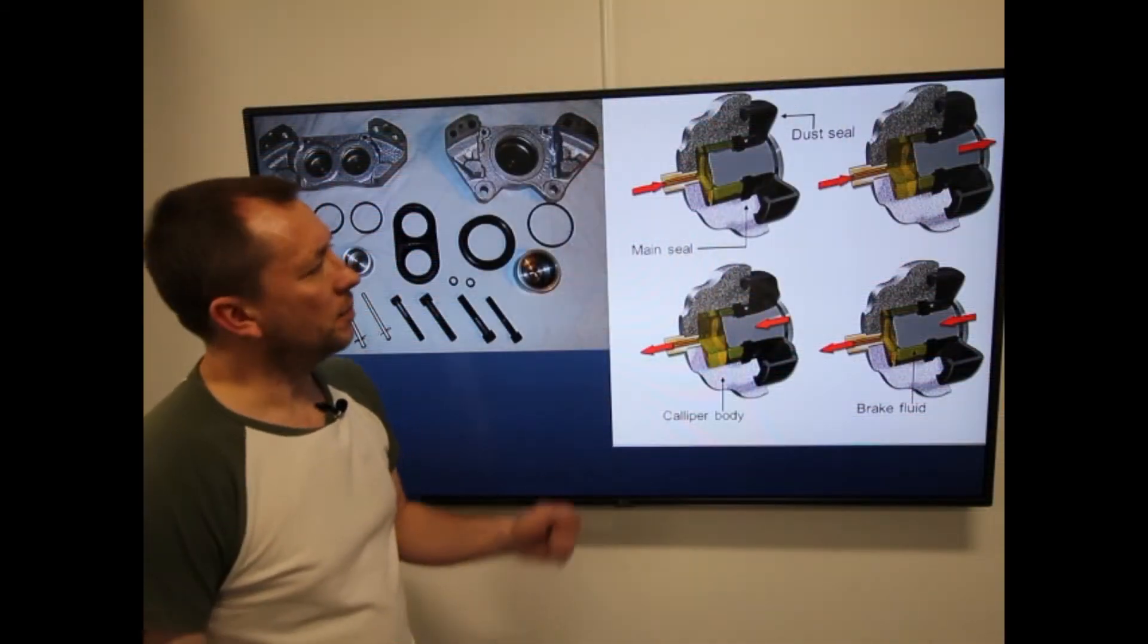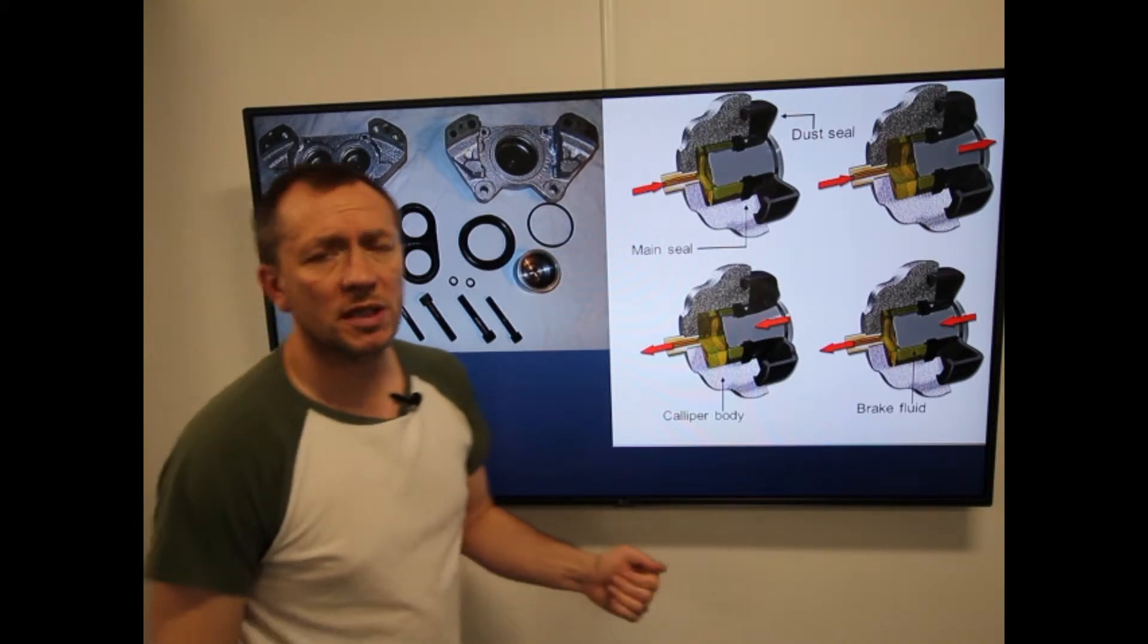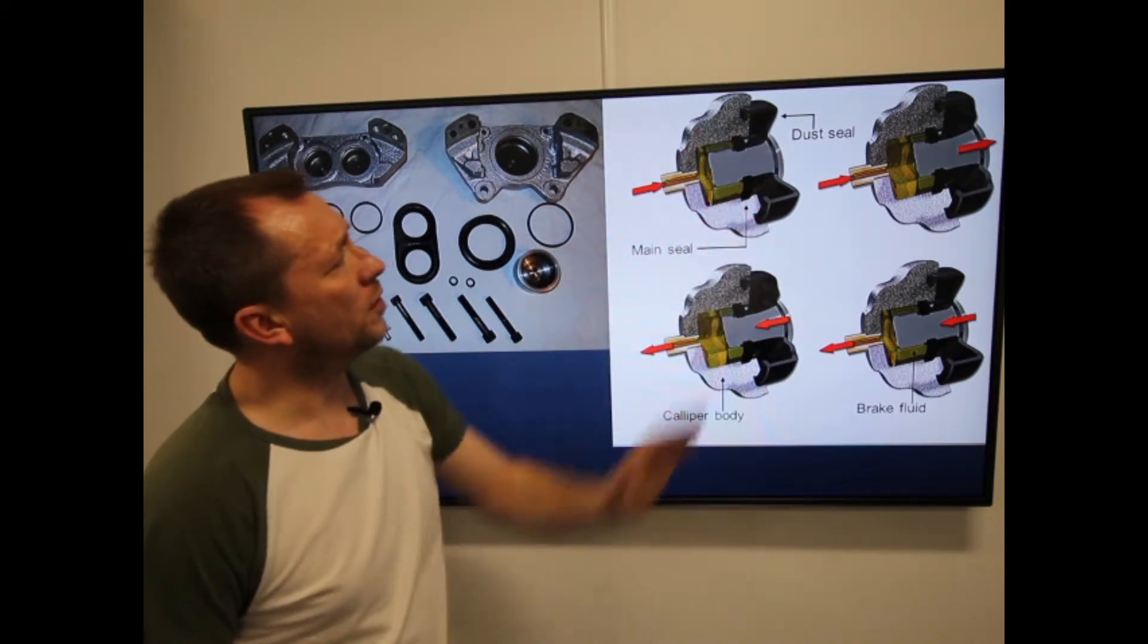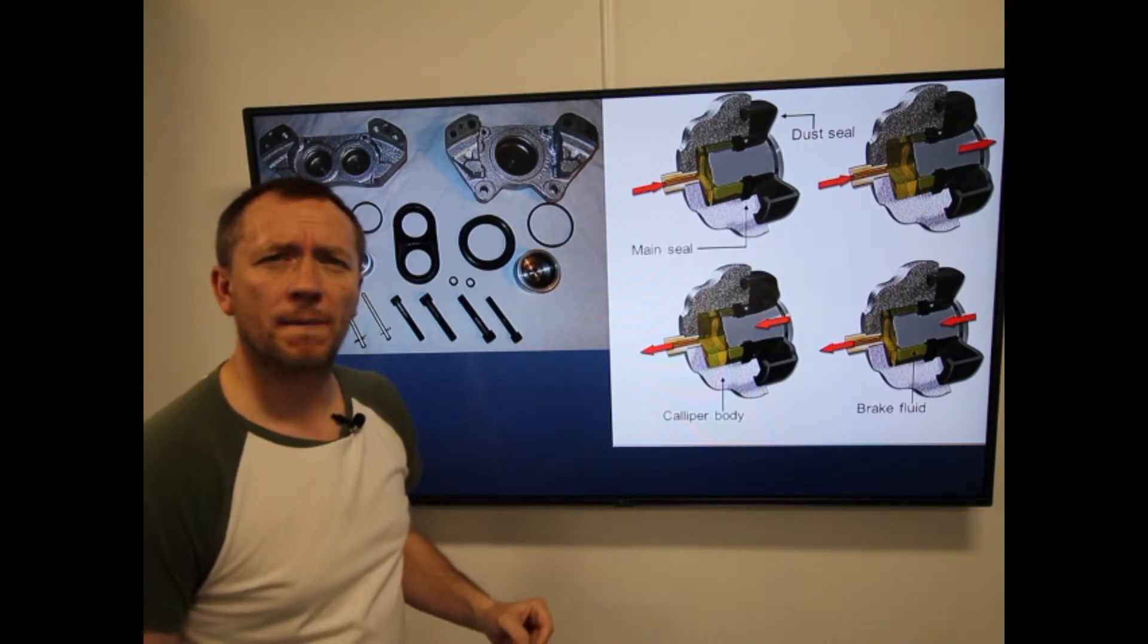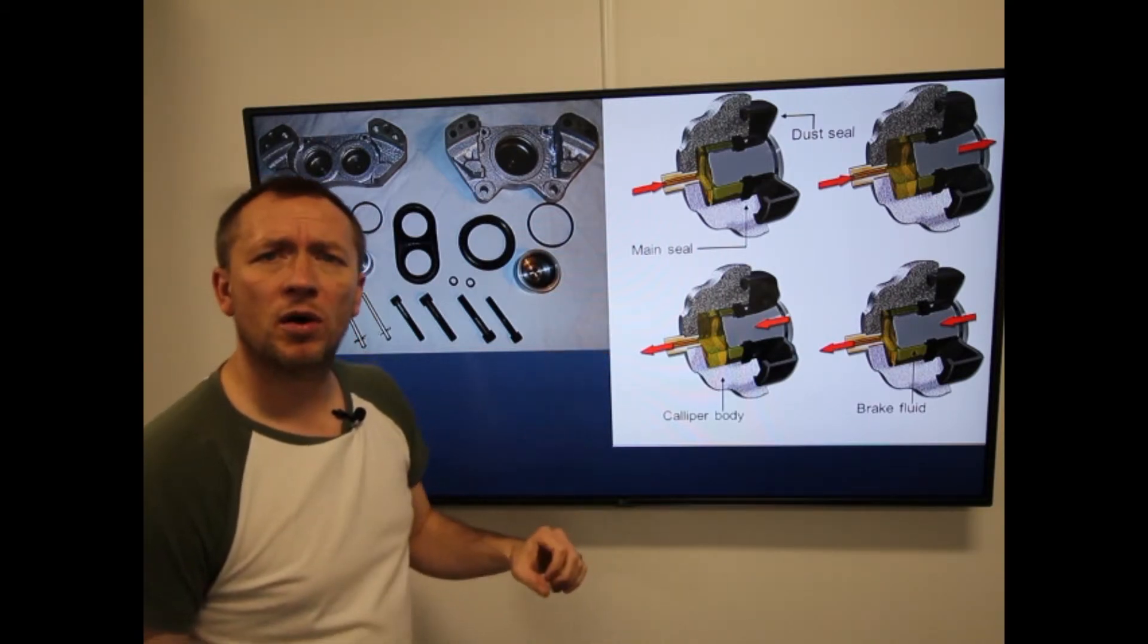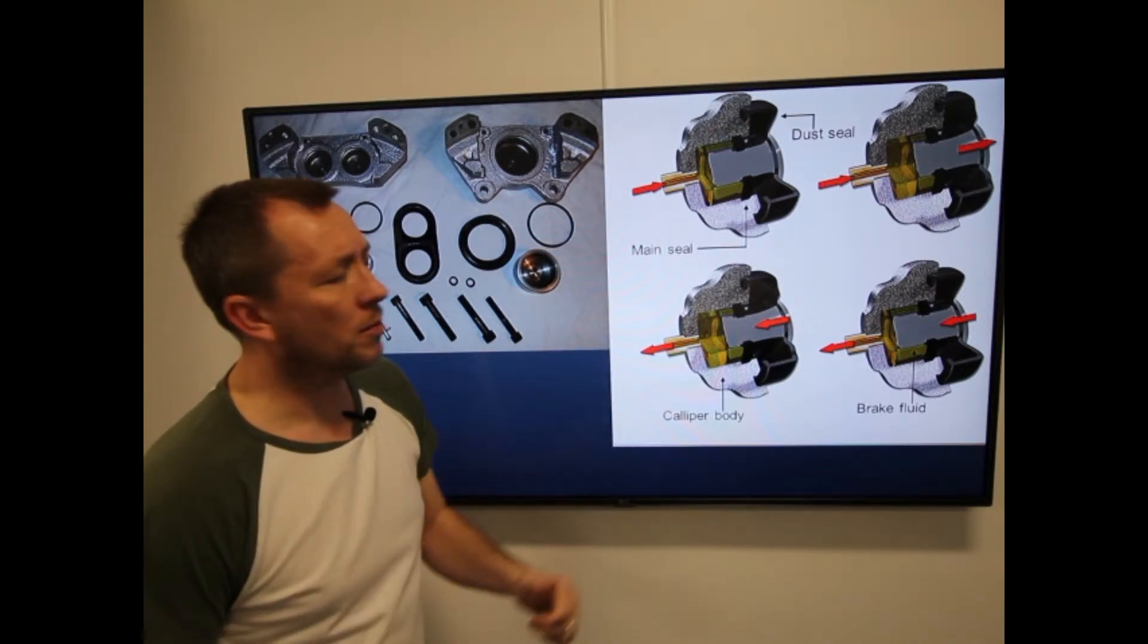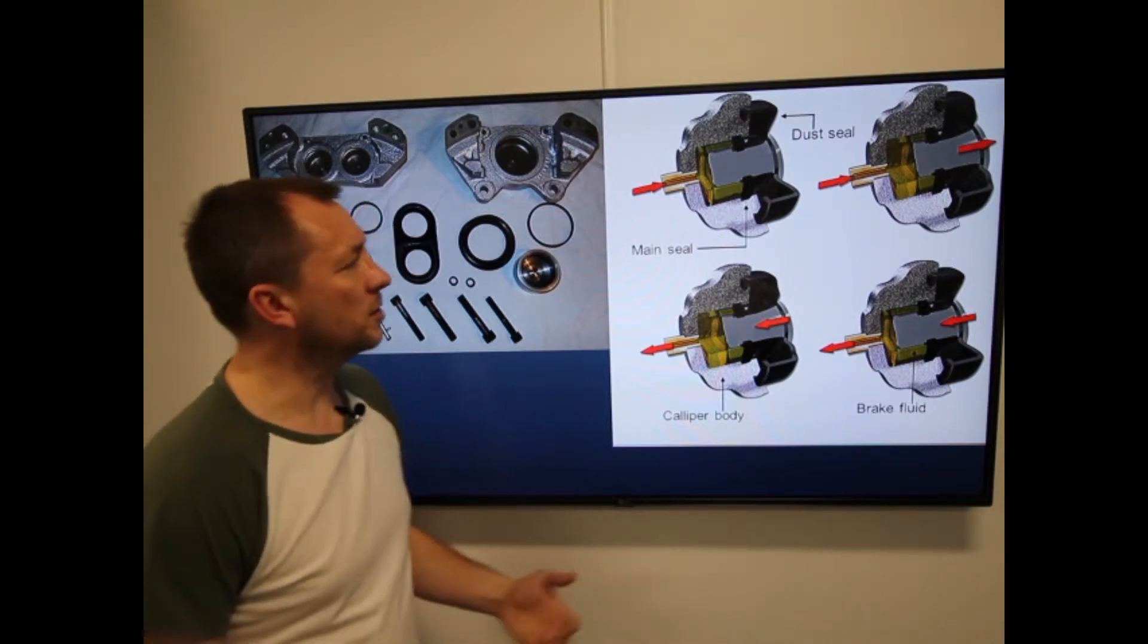One big advantage that brake discs have is the fact that they are self-adjusting. As the friction material on the pad starts to wear down, this piston will remain further and further out and the void in the back will be taken up by brake fluid. This is why I said in the previous video that if your brake reservoir is showing towards the minimum mark, it may be the fact that your brakes need changing or your brake pads need changing and don't top the system up.